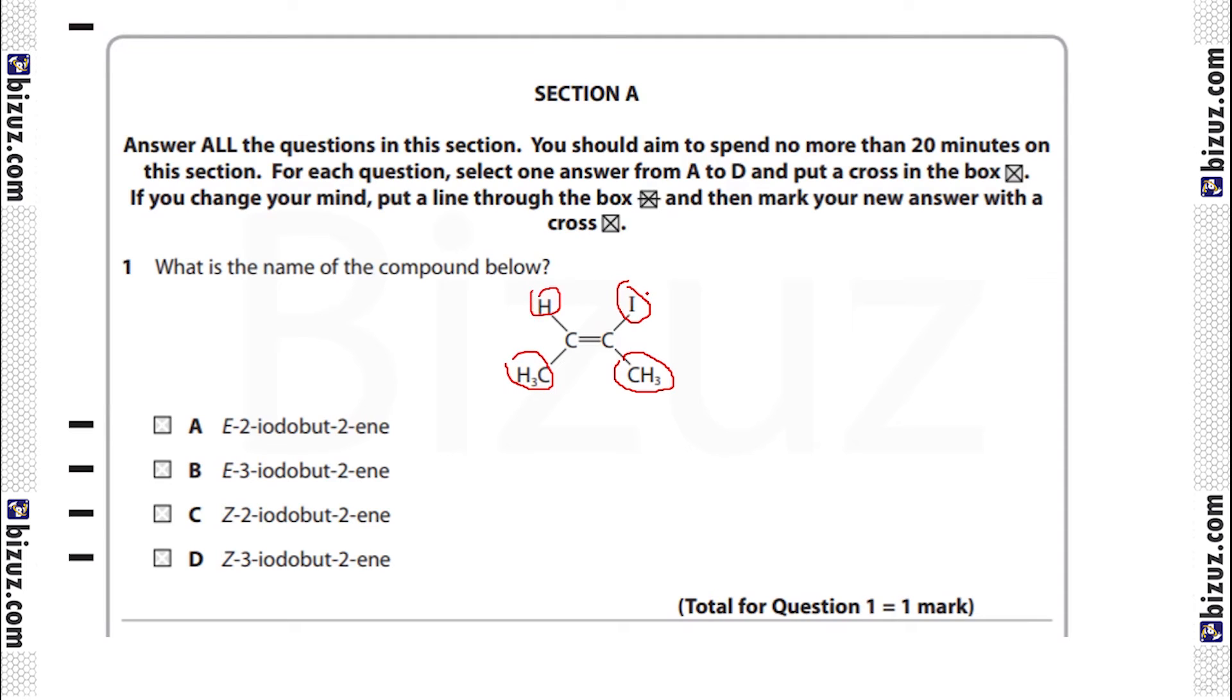So what do you get here? Two priority groups are at the opposite corners of the carbon-carbon double bond, which means this is an E-isomer. So all together, we get A as the answer: the compound is E-2-iodobut-2-ene.